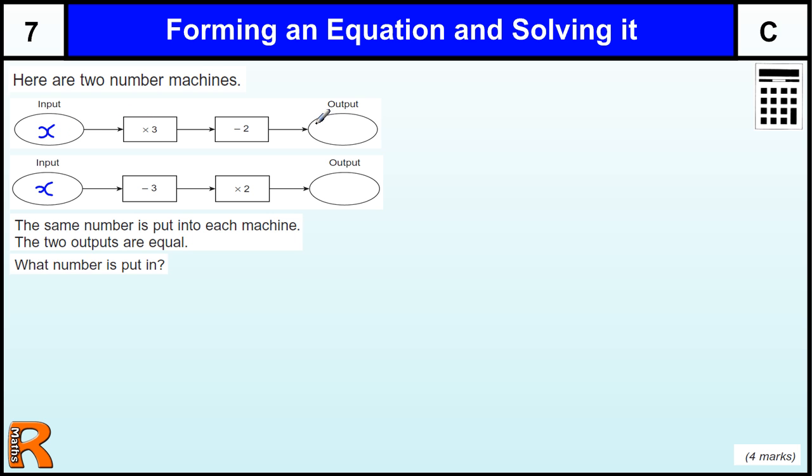So we've got x times 3 is 3x, and that's going to be 3x, and I'm going to take away 2, and you get 3x minus 2.